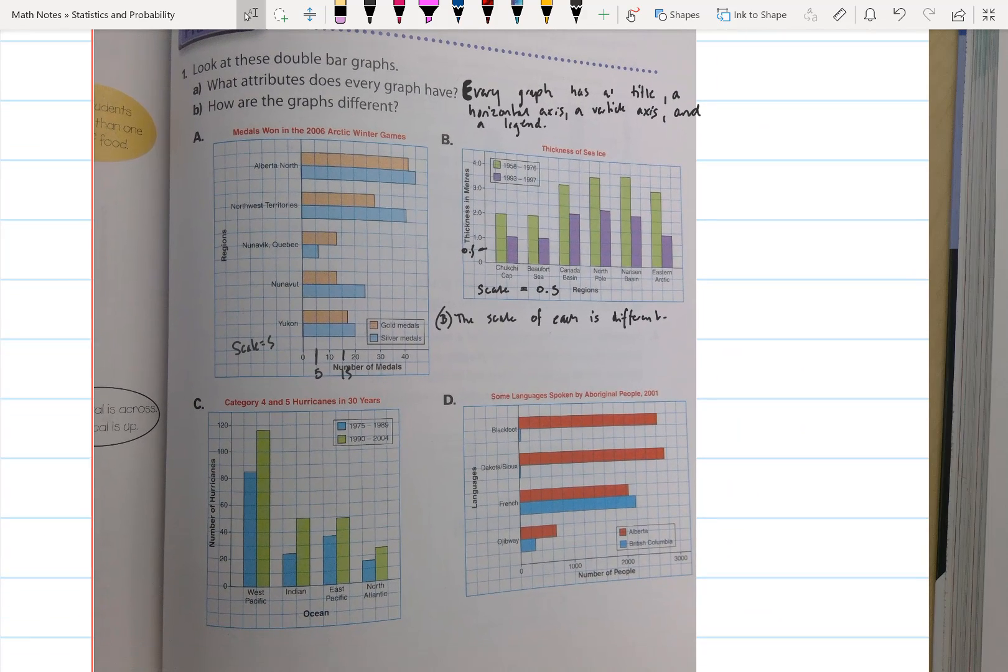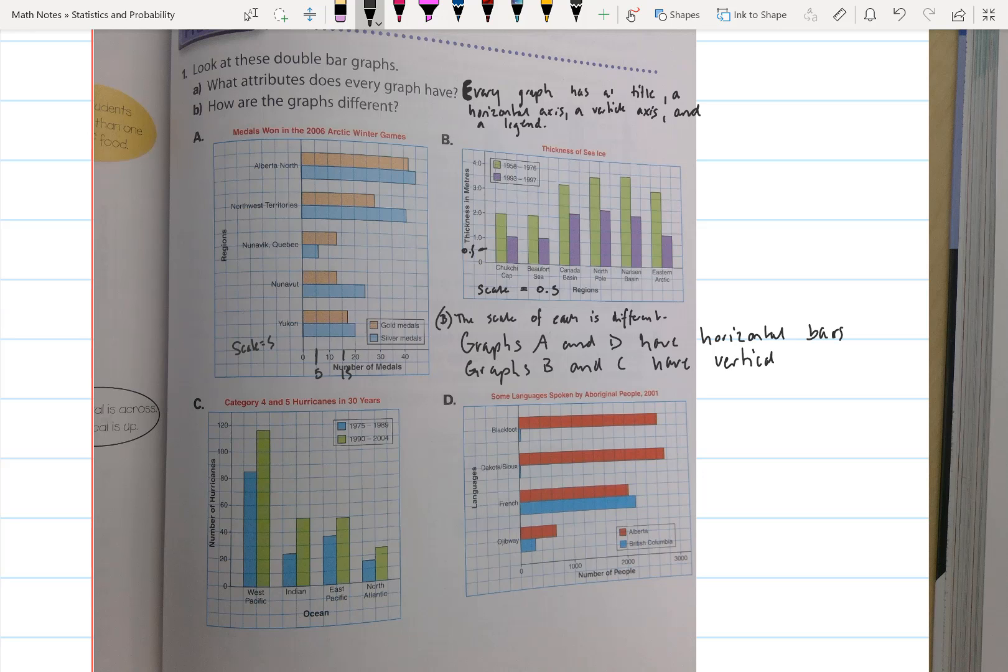Another difference between these graphs is that graphs A and D have horizontal bars and graphs B and C have vertical bars. So those are the differences between those four graphs.